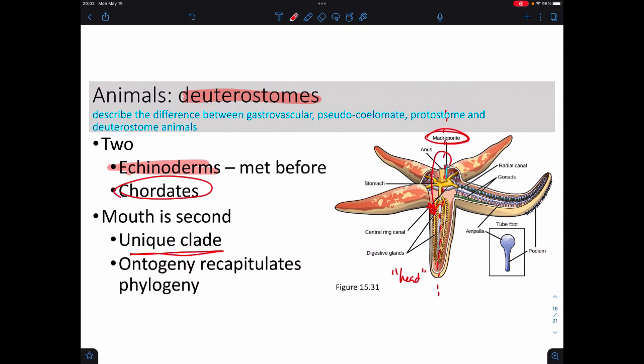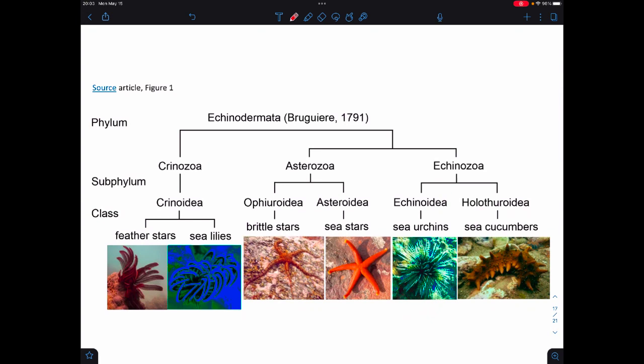The other of the deuterostomes are the chordates. Chordates we'll talk about in a moment. They're rather unique because there's only two real groups of deuterostomes. There's lots of protostomes, but there's only two extant, meaning still alive, groups of deuterostomes, which, of course, are the echinoderms and then us, the chordates. And it turns out we kind of retell the story of being deuterostomes when we develop, which, again, is that phrase, ontogeny recapitulates phylogeny.